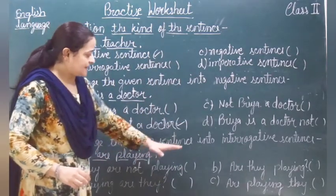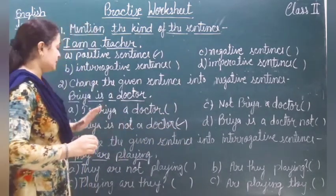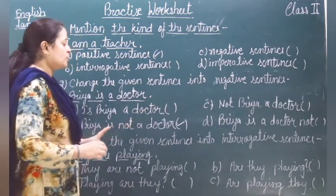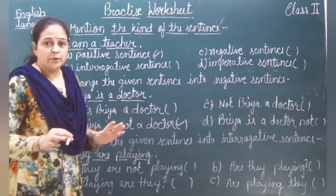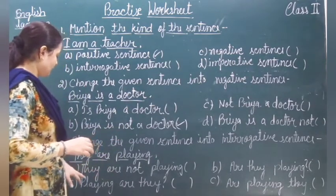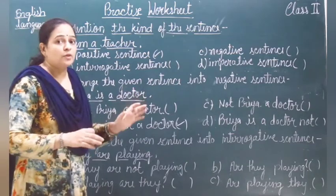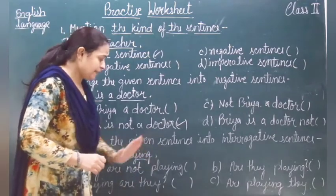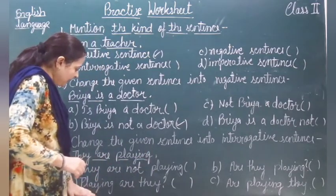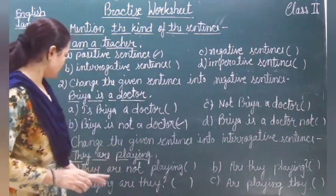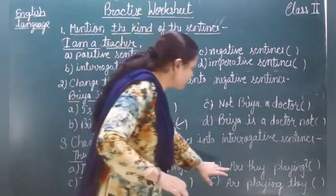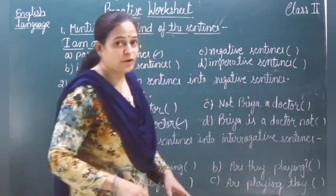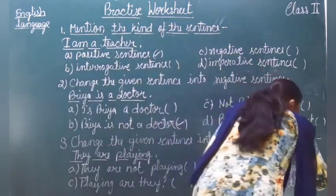Next, change the given sentence into an interrogative sentence. The sentence is: They are playing. When we change a positive sentence into an interrogative sentence, we place the verb at first and then add a question mark at the end. The verb is at the first place and there is a question mark at the end, so this will be the correct option.